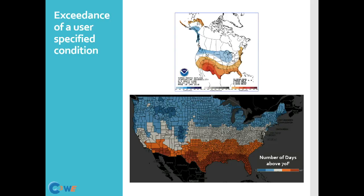You can also imagine doing the exact same thing for how many days is it going to rain next season, how many days is it going to be extremely cold, or — if you are concerned about wildfires — you might want to know how often is it going to rain in the season, is it going to be dry or wet, and how many days in a row am I going to have a hot spell? Because that might make a difference in when you make decisions.